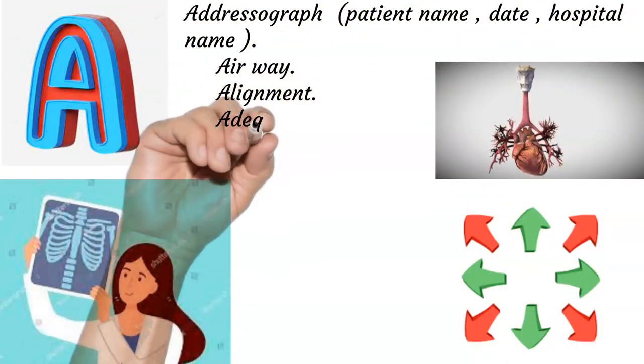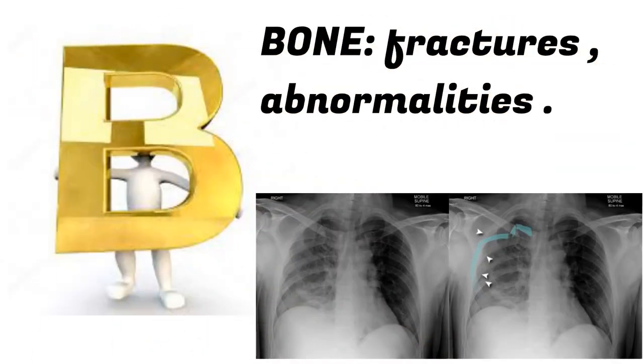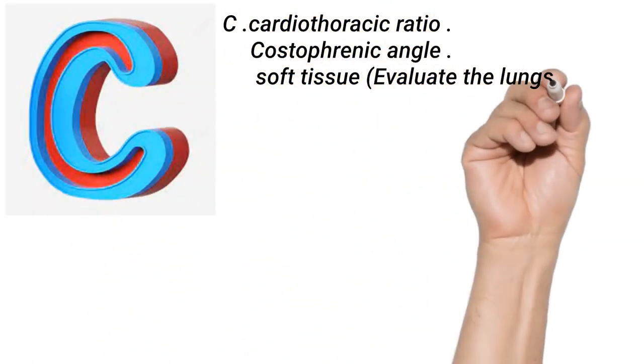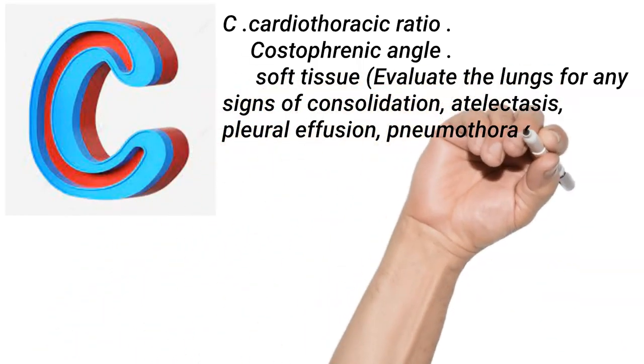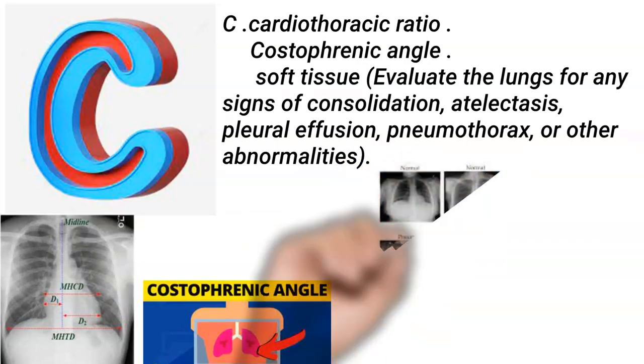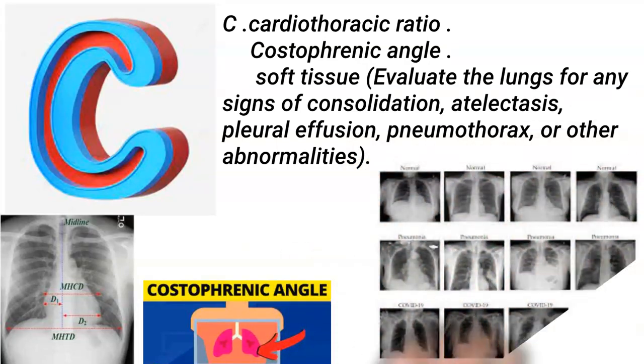B: Bone, fractures, abnormalities. C: Cardiothoracic ratio, costophrenic angle, soft tissue. Evaluate the lungs for any signs of consolidation, atelectasis, pleural effusion, pneumothorax, or other abnormalities.